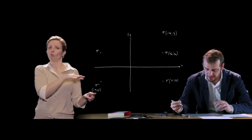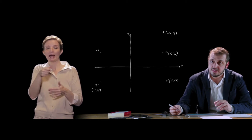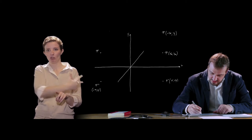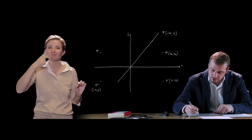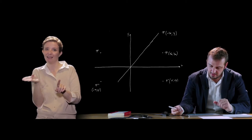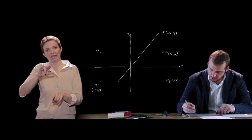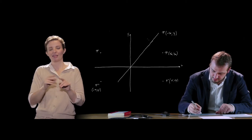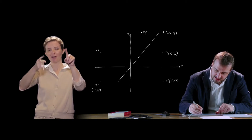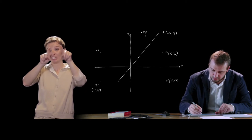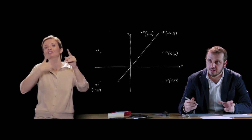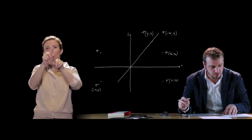Un altro punto importante è il simmetrico di P rispetto alla bisettrice del primo e terzo quadrante. Molto importante perché, come abbiamo visto nella lezione sulle funzioni inverse, la simmetria rispetto alla bisettrice del primo e terzo quadrante è rilevante. Il punto P4 simmetrico avrà come ascissa l'ordinata del punto P e come ordinata l'ascissa del punto P: si scambiano semplicemente ascissa e ordinata.